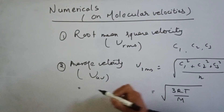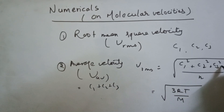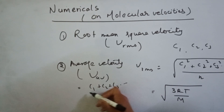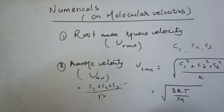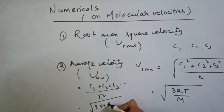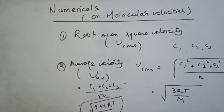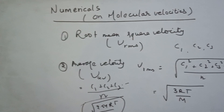We can write molecules c1, c2, c3. The average velocity formula is derived as root under 8RT divided by πM, which gives approximately root under 2.54RT divided by M.